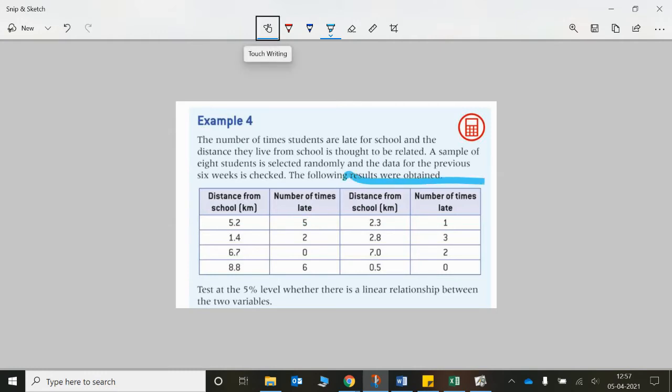Obviously this part of the table just fits in underneath here. So this is one table. Test at the 5% significance level whether there is a linear relationship between the two variables.